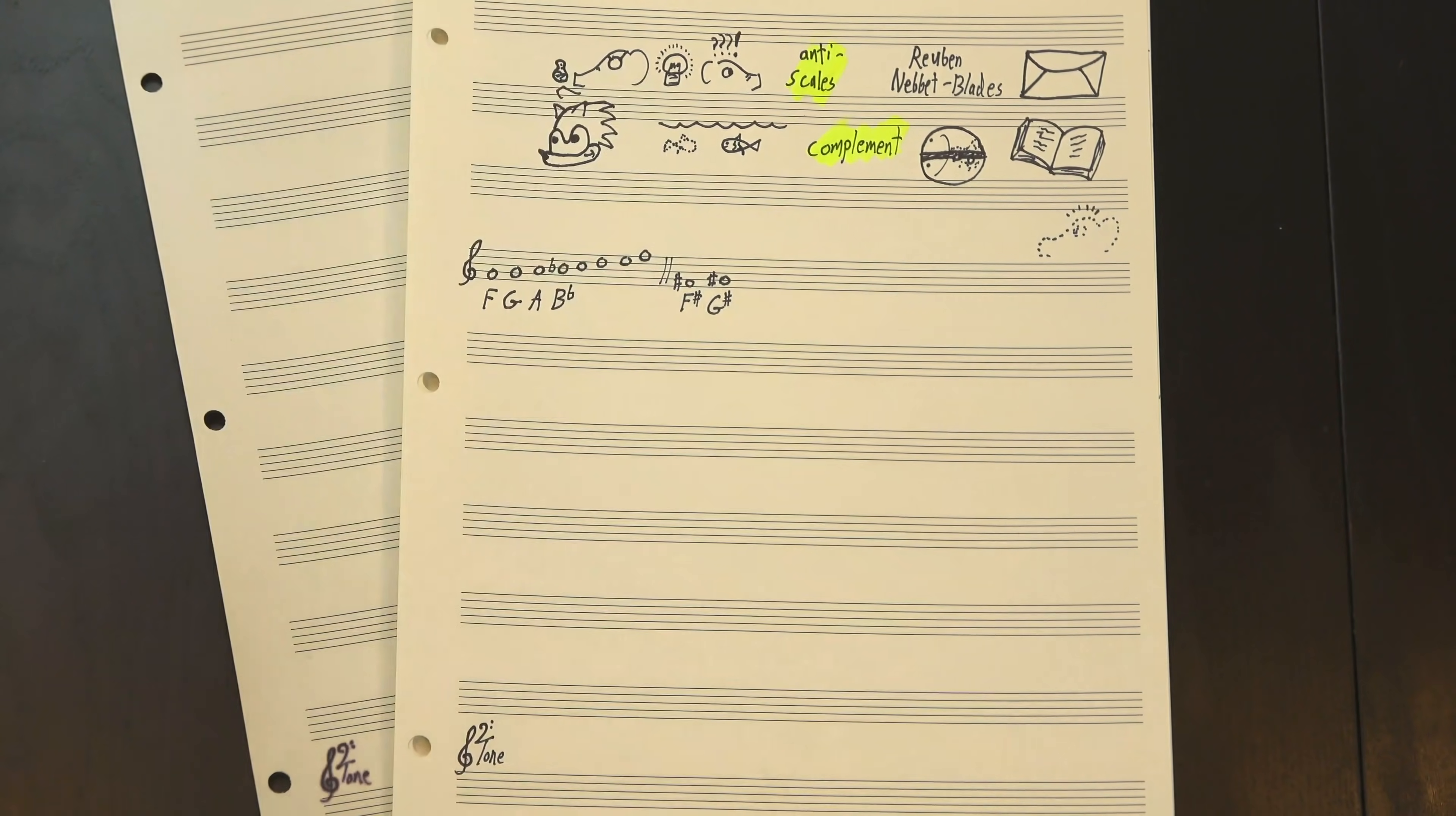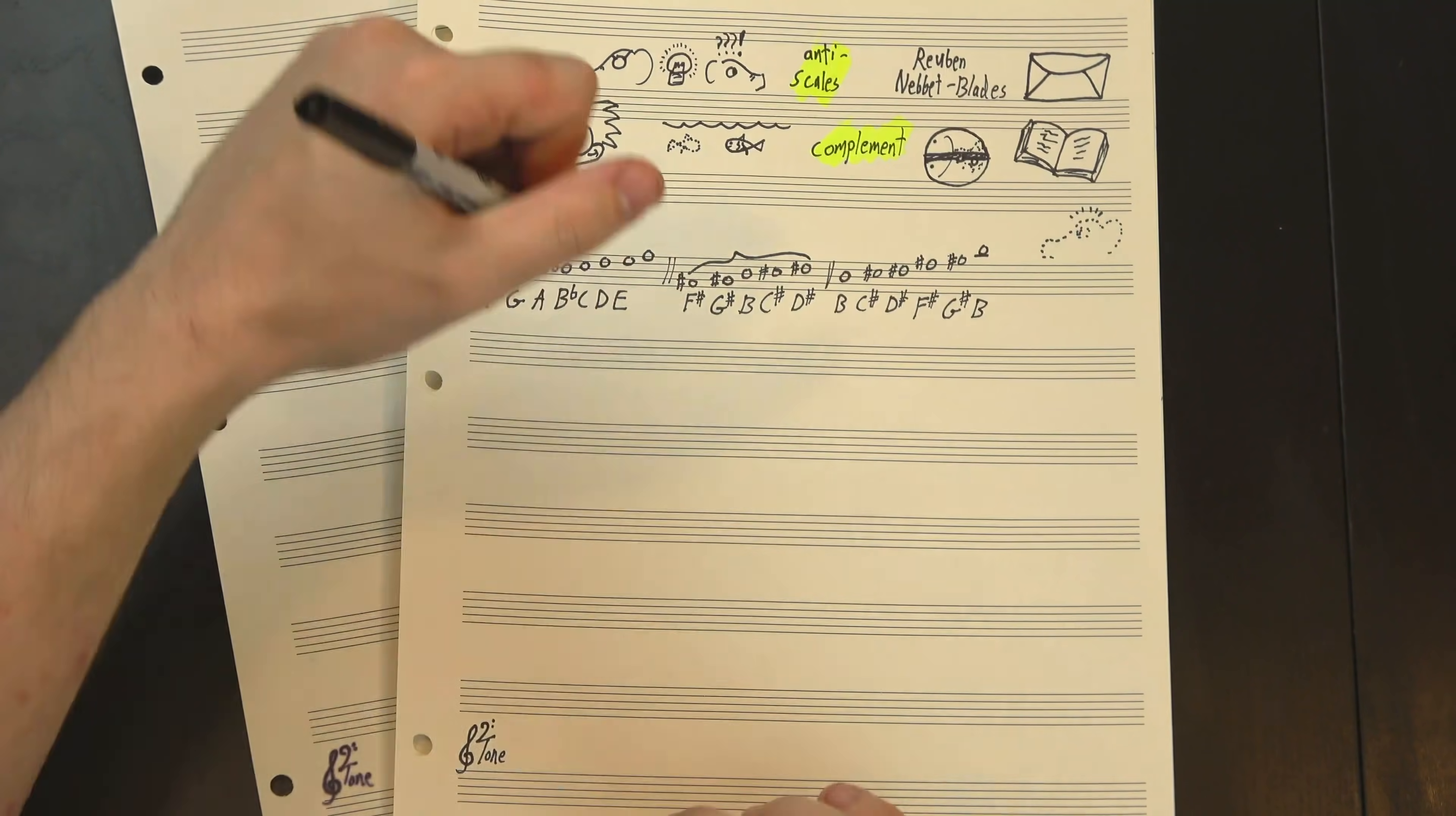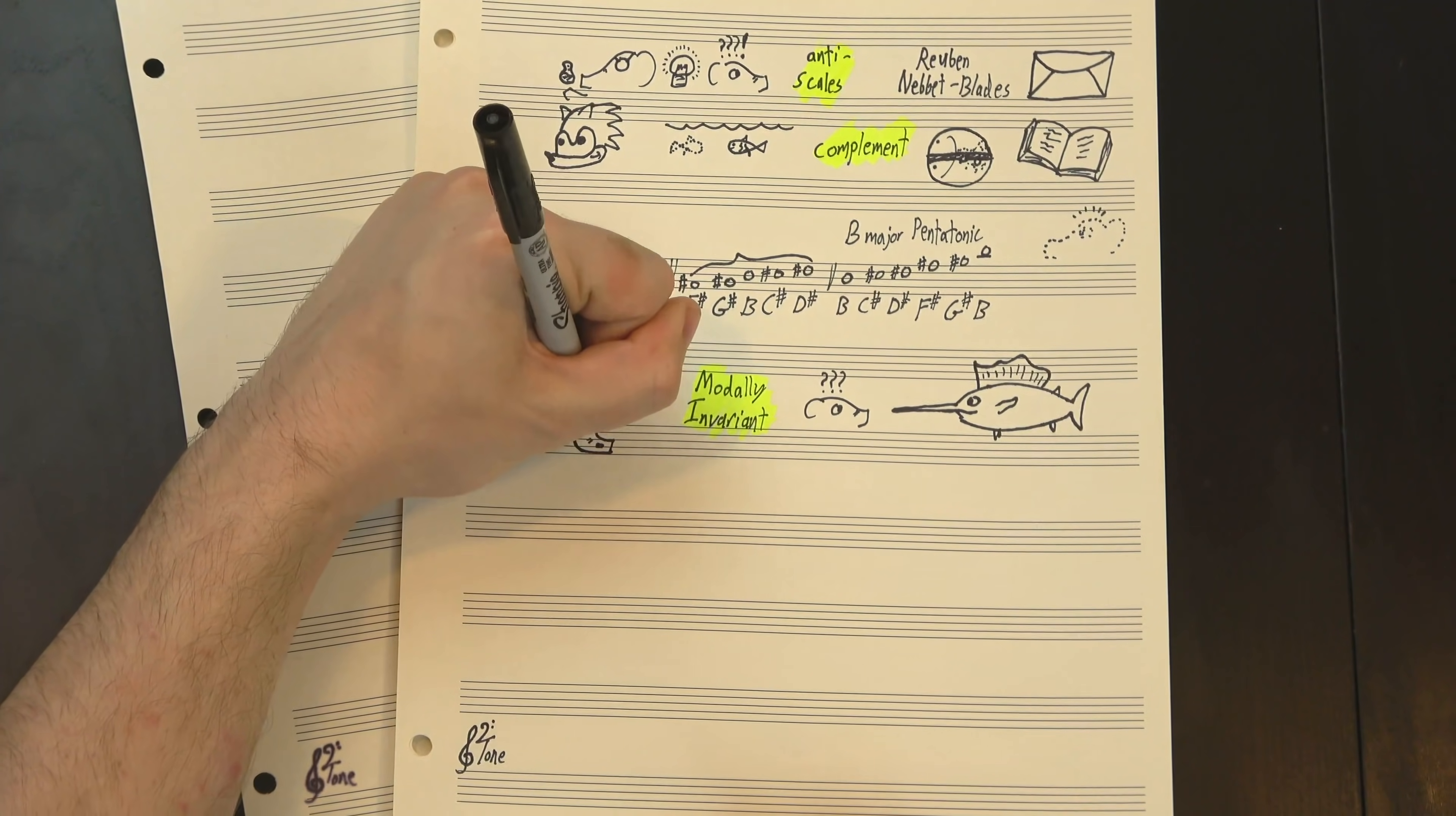Speeding this up a bit, we have A, we have B-flat, we don't have B, we have C, we don't have C-sharp, we have D, we don't have D-sharp, and we have E. And if we take these extra notes and arrange them like so, we see that the complement of F-major is a scale called B-major pentatonic. Sort of. Why only sort of? Well, this process is what's called modally invariant, which is a fancy way of saying it doesn't matter which note is the root.